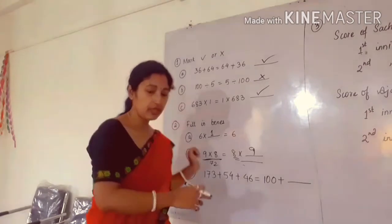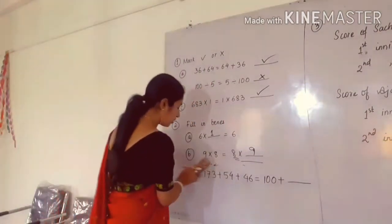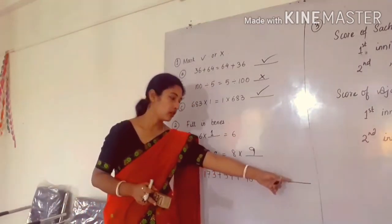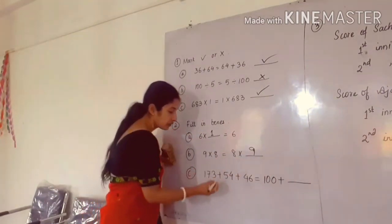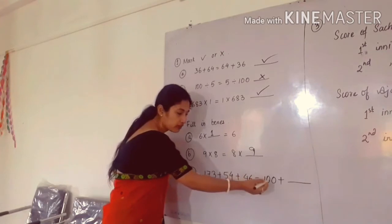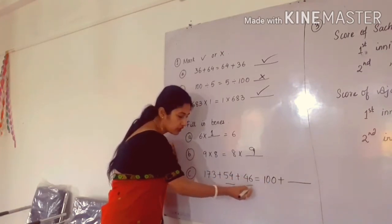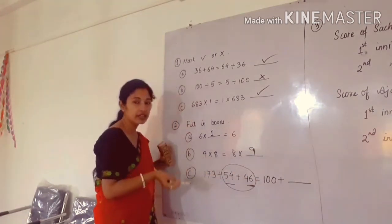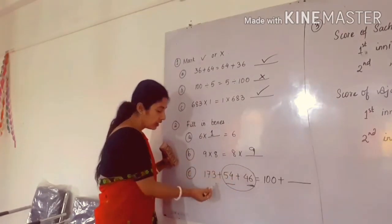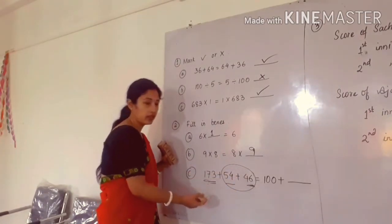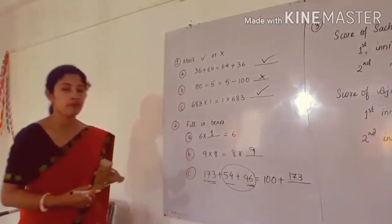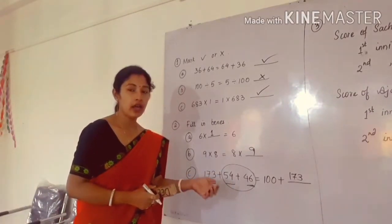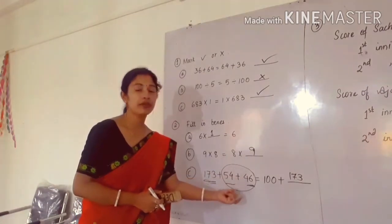Next is number C. In number C, we have 3 numbers: 173, 54, and 46. In the right hand side, we have only 100 but we have to write in the blank space. Which numbers do you add to get 100? 54 and 46. When we add 54 and 46, we get 100 — these two numbers are already added. So the next number you have to write is 173, because it is remaining. Here we are using the associative property in addition, because we are adding two numbers first.